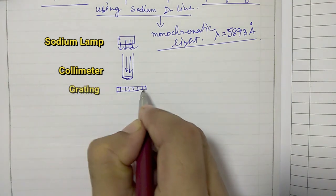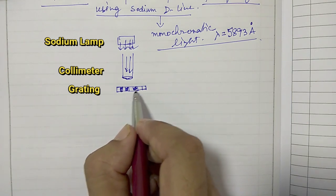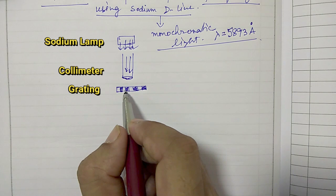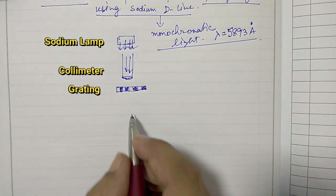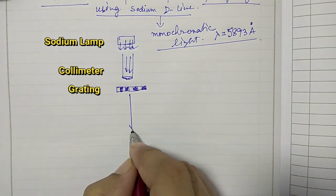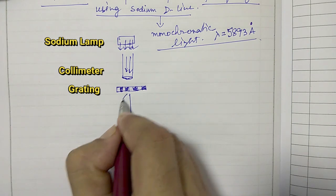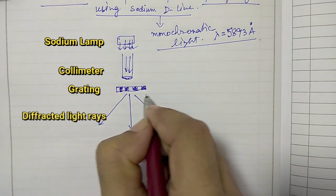The grating is transparent, not transparent, transparent, not transparent and so forth. These are the transparent parts and these are non-transparent parts. What this grating does is it diffracts light in different directions.